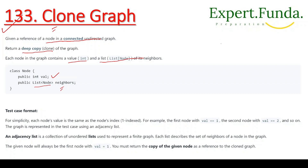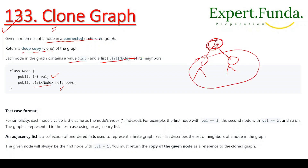If we represent a node, there will be a value and a list of neighbor nodes. Any node can have a list of connected nodes. So each node contains one value and a list of nodes. For simplicity, each node's value is the same as the node's index. The first node value equals one, the second node value equals two, and so on. The graph is represented in test cases using an adjacency list.